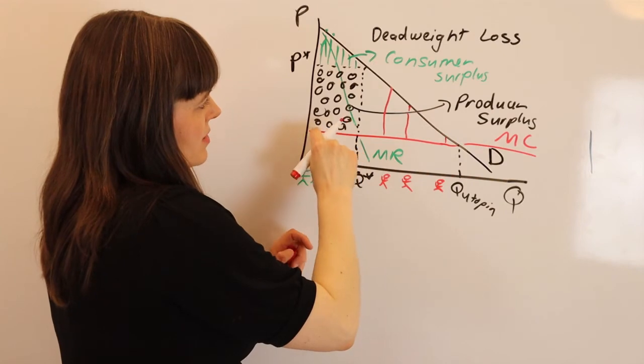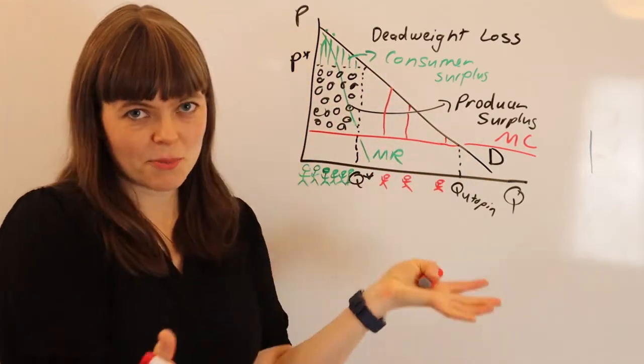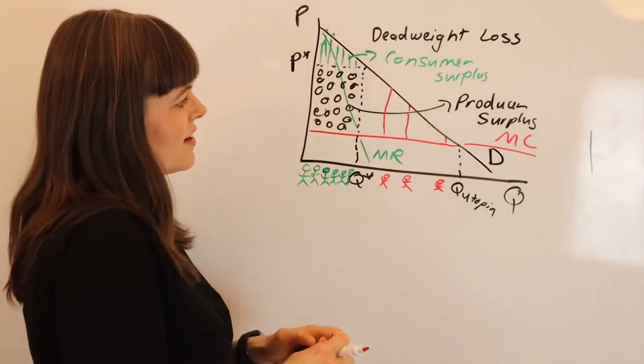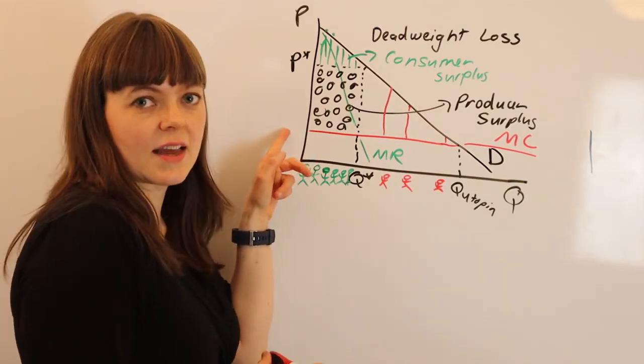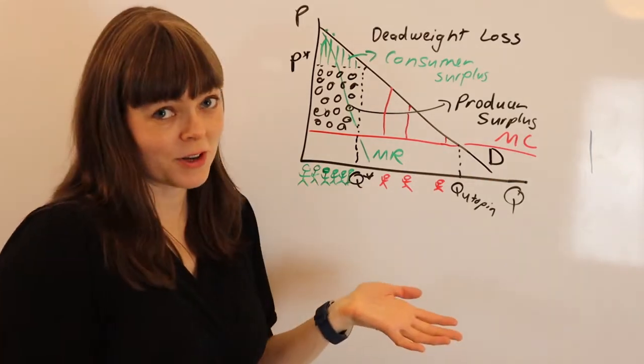In which case, the consumer surplus is this entire big triangle here. There's no producer surplus in that case because the company is just selling things at marginal cost, so there's no profit - there's no revenue actually.